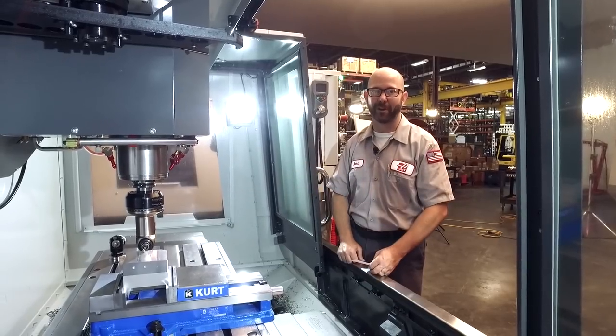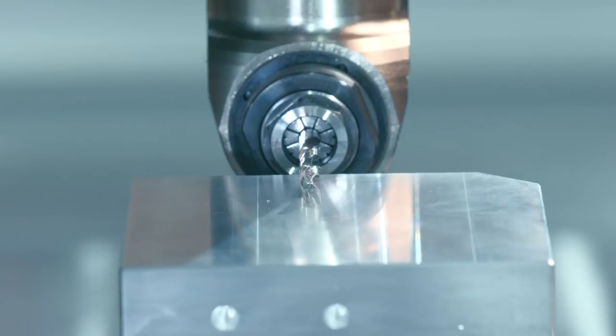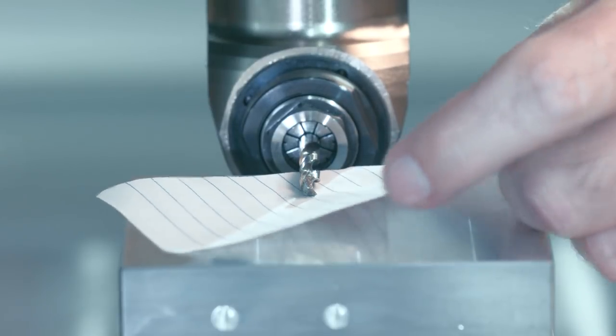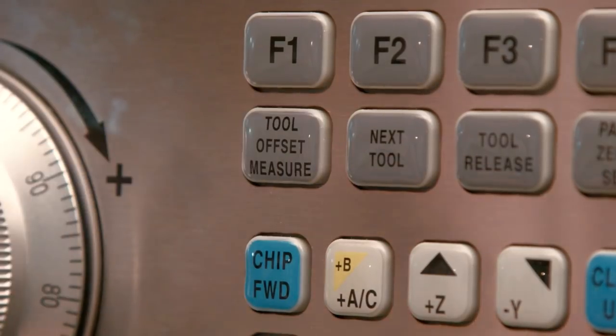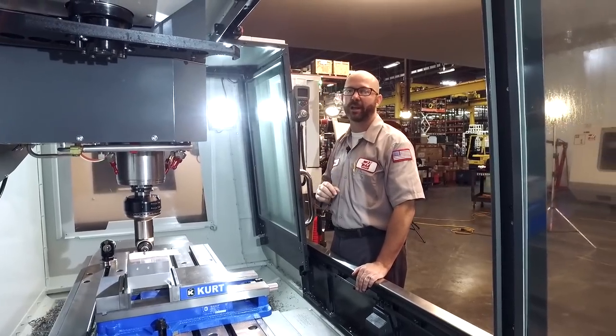For this part, I simply jog my Z down, touching off the side of my tool on top of my part. Once there, I press the tool offset measure key, then I bring my Z down by half the diameter of the tool.